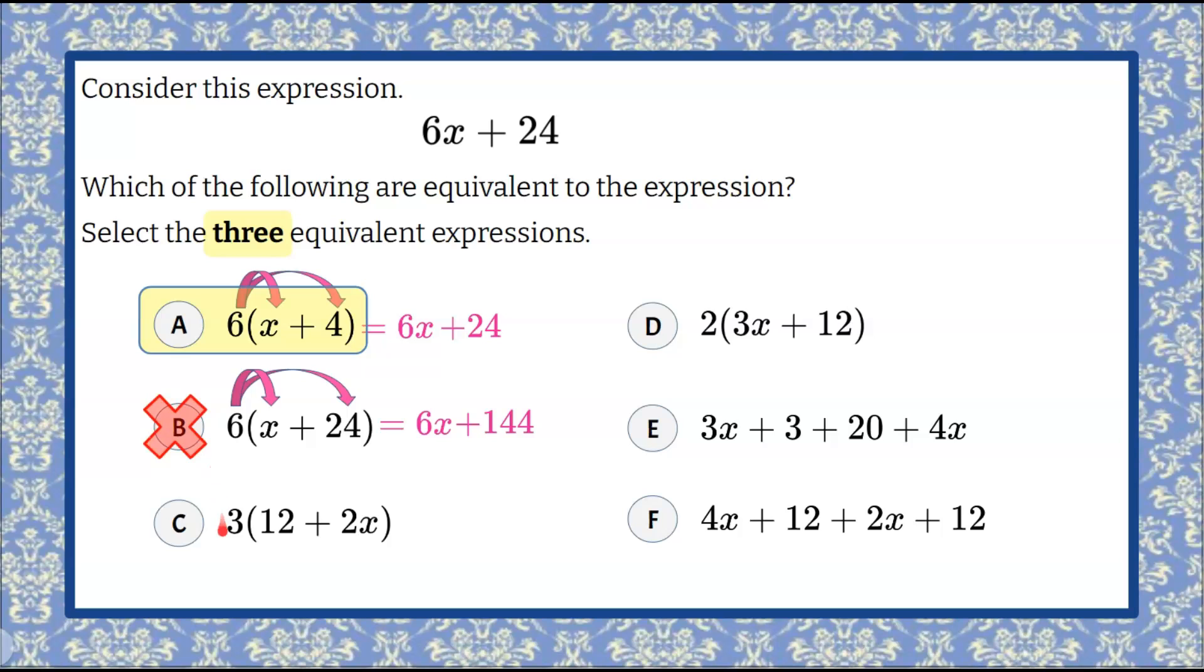Let's look at C. Let's distribute again. 3 times 12 is 36. 3 times 2x is 6x. So it looks different. Let's use commutative property to write it with the algebraic term first. So 6x plus 36 is equivalent to 36 plus 6x using the commutative property. And we can see now that 6x plus 24 and 6x plus 36 are not equivalent because 24 and 36, the constants, are not the same.